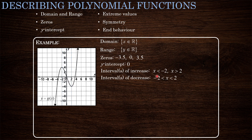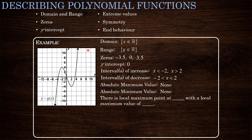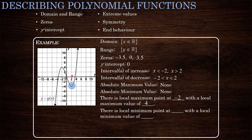This function does not have an absolute maximum value because it continues upward forever, and it does not have an absolute minimum value because it continues downward forever. However, there is a local maximum point at x equals negative 2, where the local maximum value (the y value) is 4. Similarly, there is a local minimum point at x equals 2, with a local minimum value of negative 4.